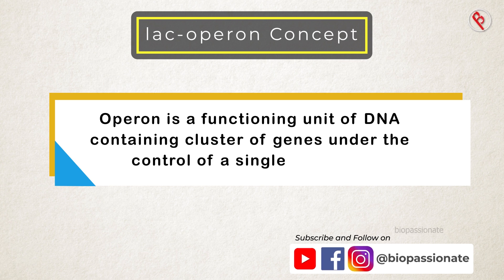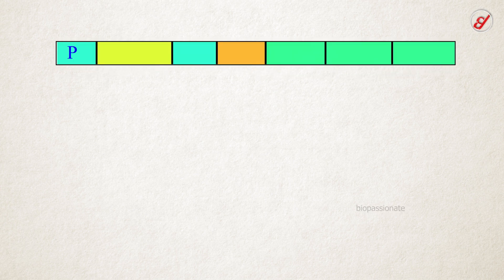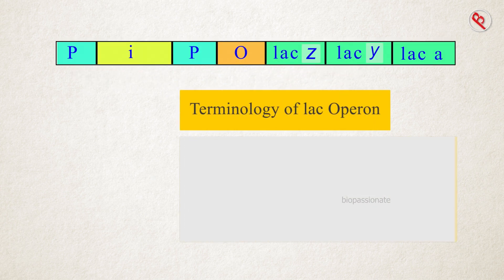Lac operon concept explains the metabolism of lactose in prokaryotes. It consists of various genes that help in lactose metabolism by producing different enzymes. Before moving to the concept, let's understand the terminology.